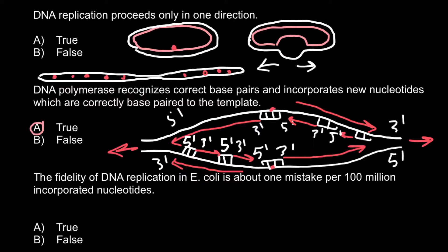The next statement: the fidelity of DNA replication in E. coli is about one mistake per 100 million incorporated nucleotides. Is it true or false? This is true. In E. coli, one mistake happens about every 100 million incorporated nucleotides. The genome of E. coli, depending on the strain, is roughly about 4.5 million bases. That means one cell has to undergo about 200 replication cycles in order to get one mistake, or we can say that we need 200 bacteria replicating to incorporate one mistake in their genome.